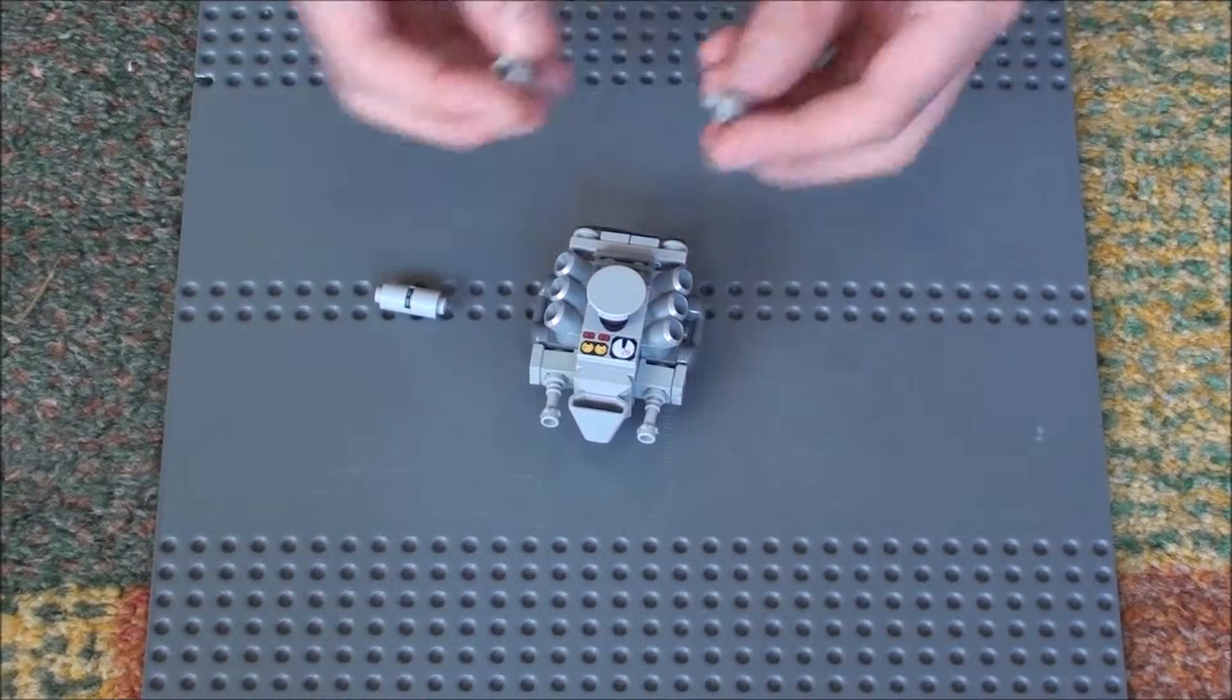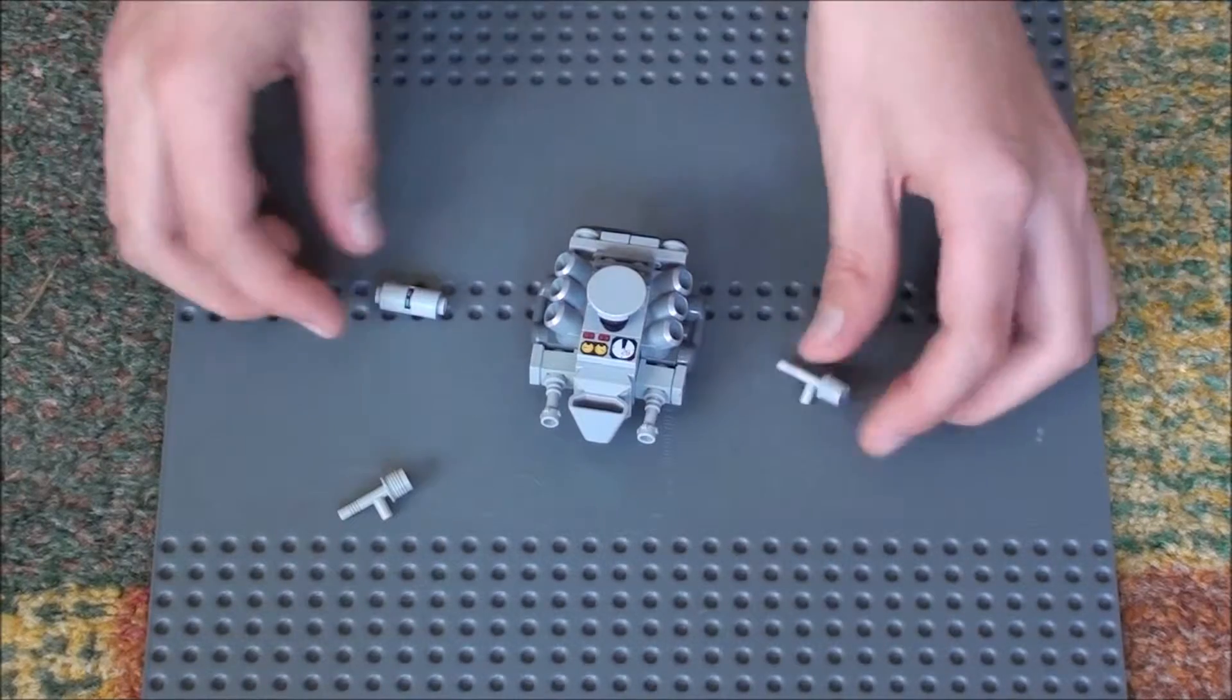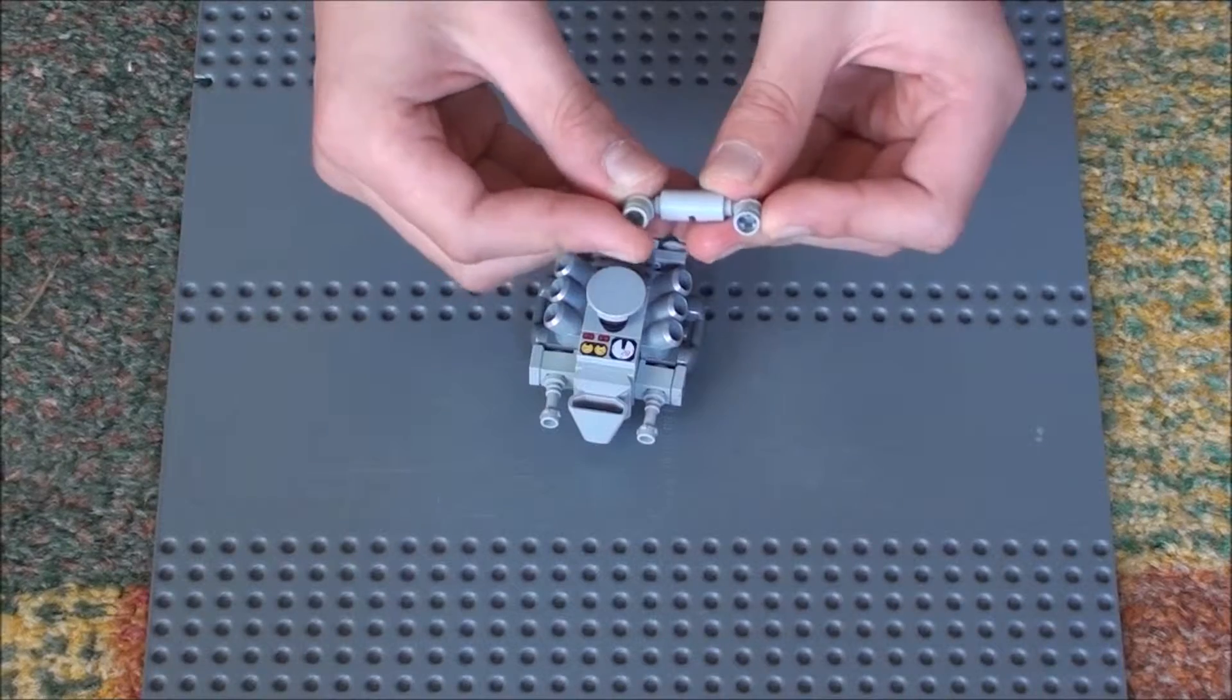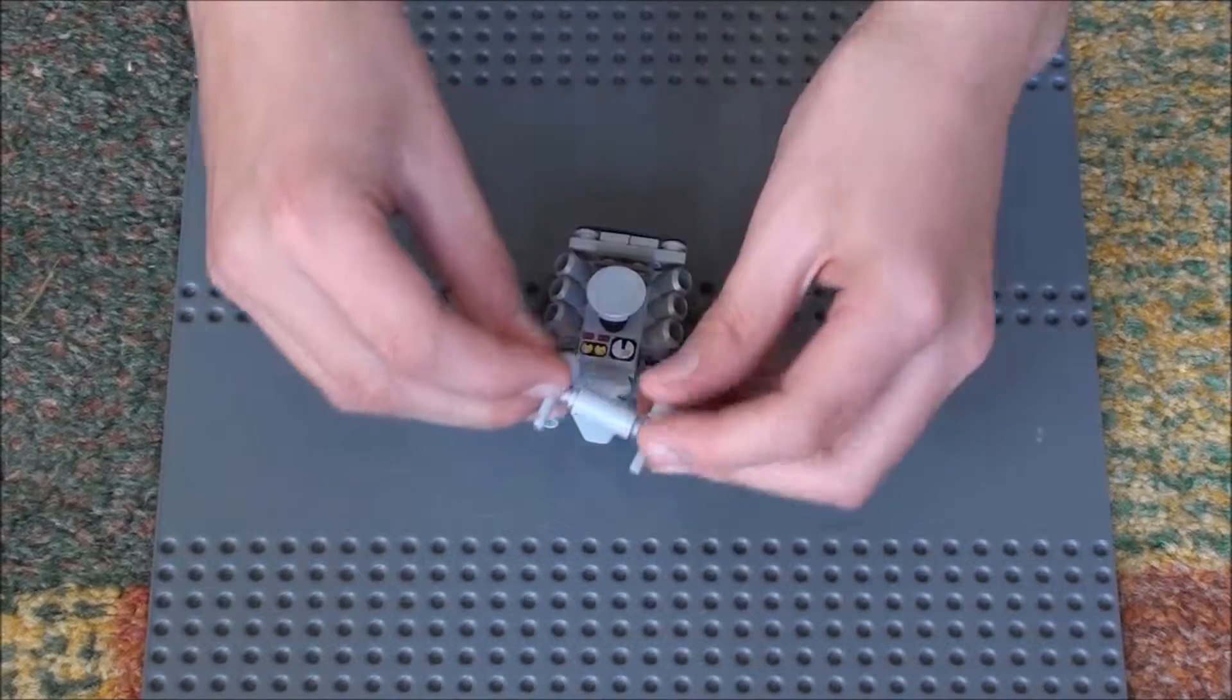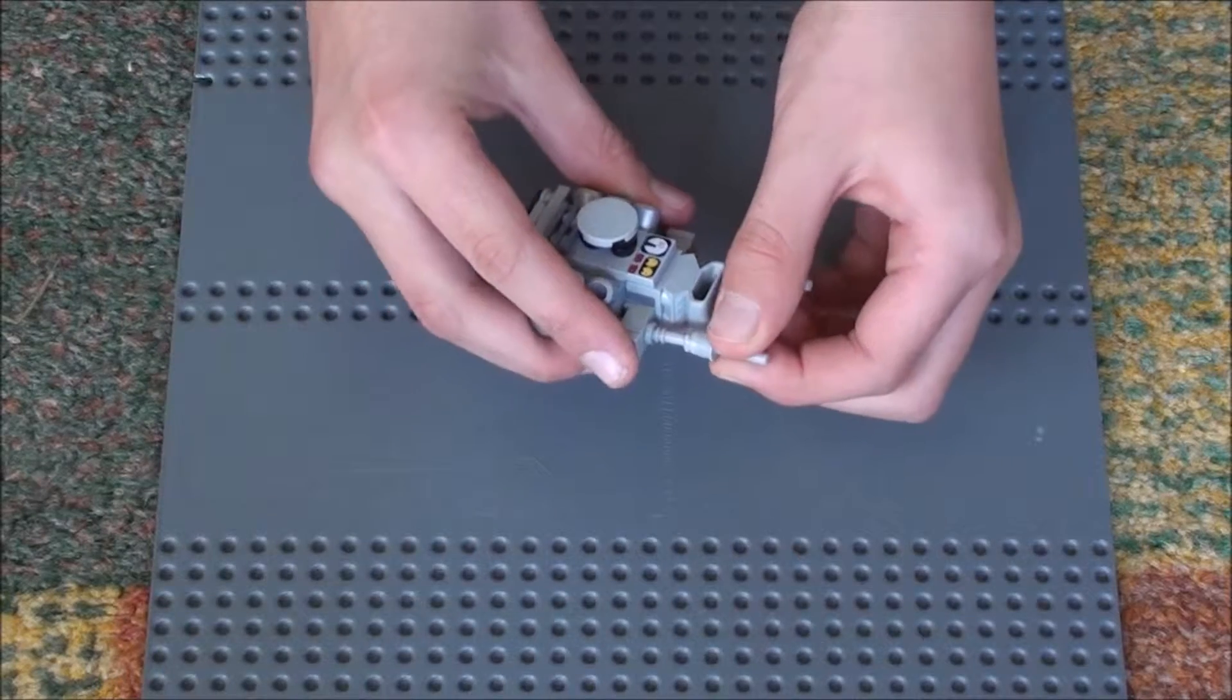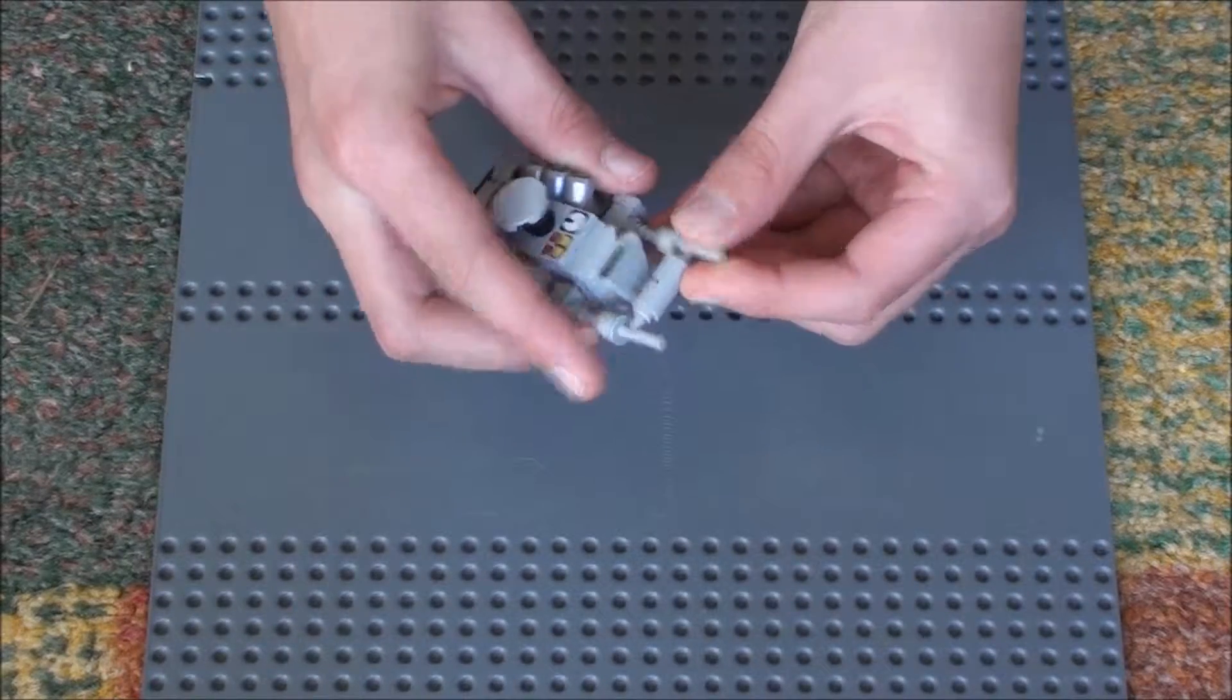And get these 2 blaster pieces and connect them via the pins and the cylinder piece. And put the blasters onto the lightsaber hilt like that.